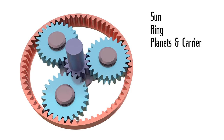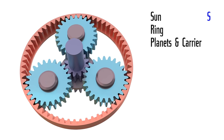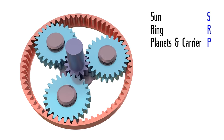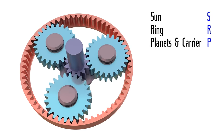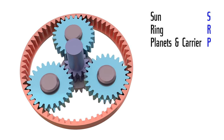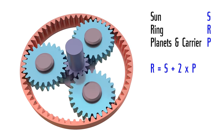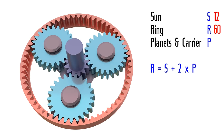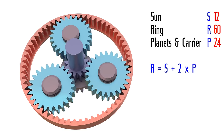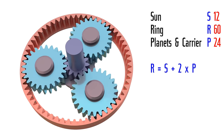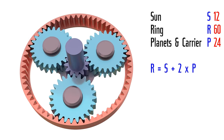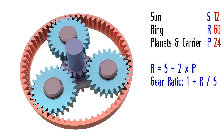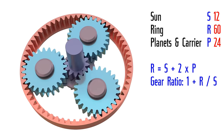Let's denote the number of teeth in the sun as s, the number of teeth in the ring as r, and the number of teeth in the planet gears as p. The three numbers must satisfy the equation r equals s plus 2 times p. In our example, r is 60, s is 12, and p is 24. The gear ratio in our configuration is calculated as 1 plus r divided by s, giving a gear ratio of 1 to 6.